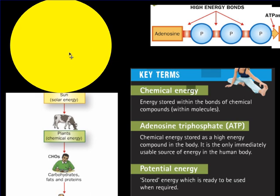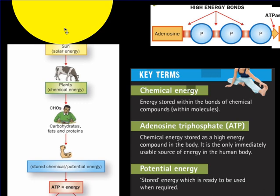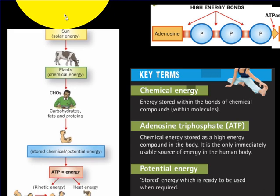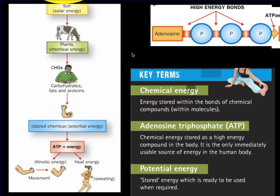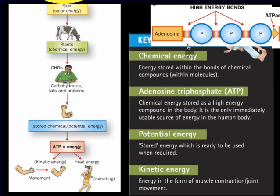Our stored chemical potential energy within the muscles, when we eventually contract and break this energy down, we get kinetic energy. Kinetic energy is the energy in the form of muscle contraction—it's movement energy. Potential energy is stored energy; kinetic energy is movement energy. Something has actually happened: a muscle contraction, a joint movement, anything along those lines.